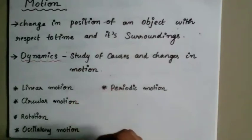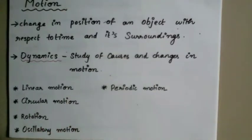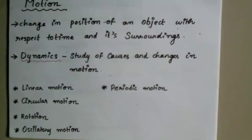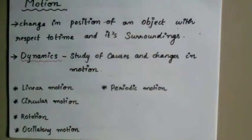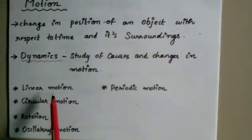Rotation is the spinning of an object about its own axis — for example, the rotation of the Earth. Oscillatory motion is the to-and-fro movement of an object, like the pendulum of a clock. Periodic motion is repeated motion at regular intervals — a pendulum is both oscillatory and periodic motion.